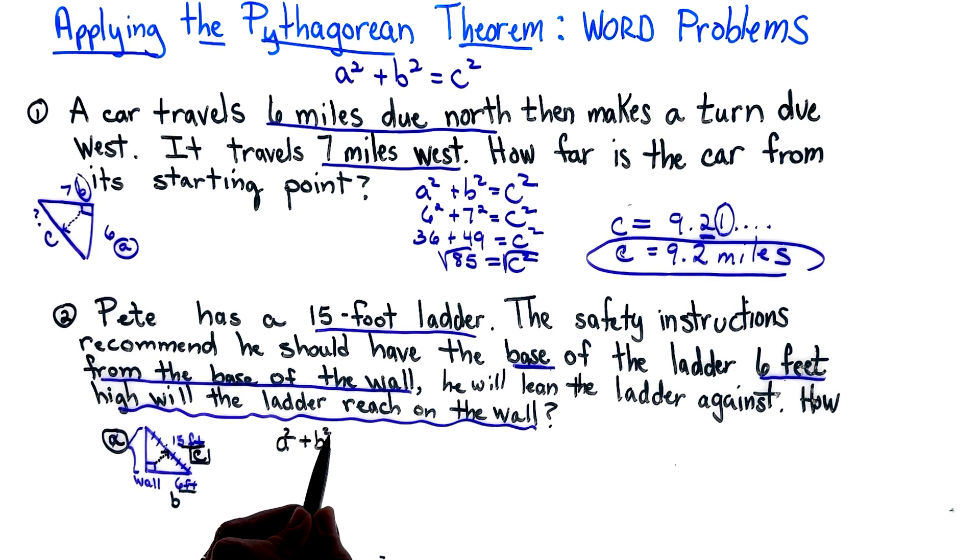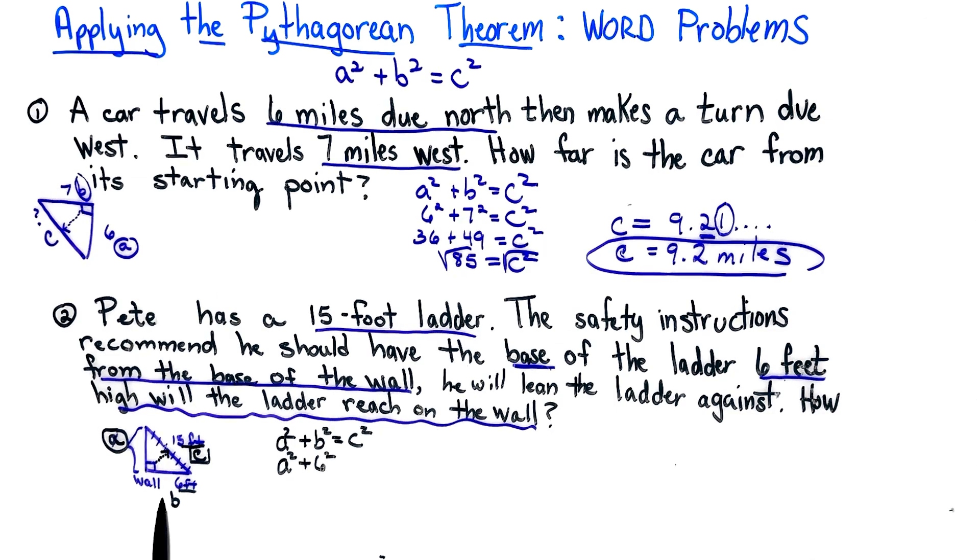So this a is what we're actually looking for because we have b is six feet, c is 15. When we set up our problem, a squared plus b squared equals c squared. We do not know a, we do know b which is six, the distance from the wall, and we know our ladder is 15 feet.